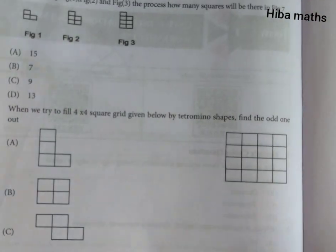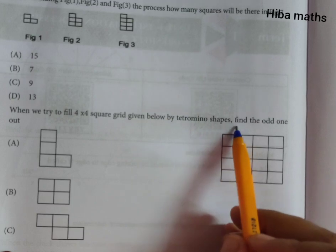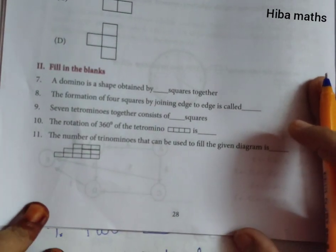Sixth question, when we try to fill 4 into 4 square grid given below with the tetromino shapes, find the odd one out. The 4th option is suitable for us. Option C is suitable for us.